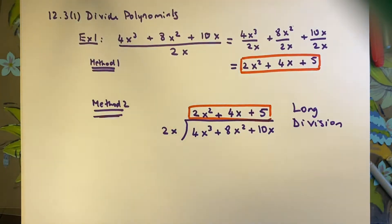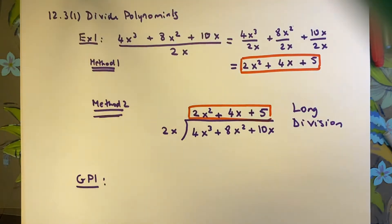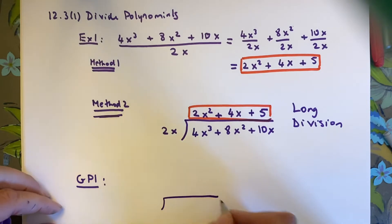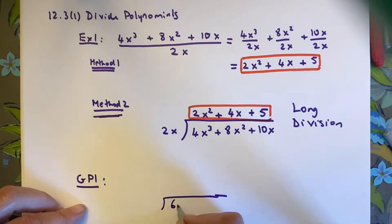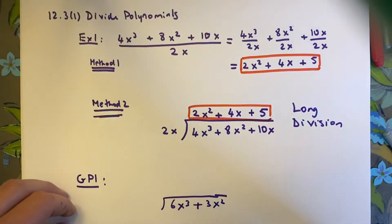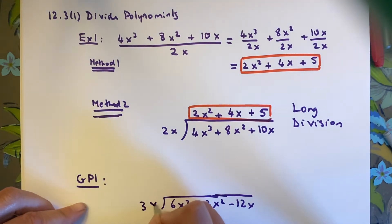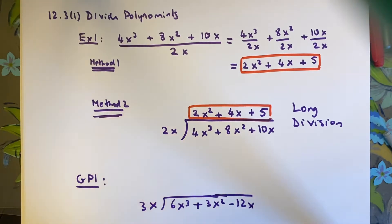Long division is mostly what we're going to use in this chapter. Now try guided practice number 1: divide 6x cubed plus 3x squared minus 12x by 3x. Pause the video, do this on your own, and when you come back I will work it out for you.